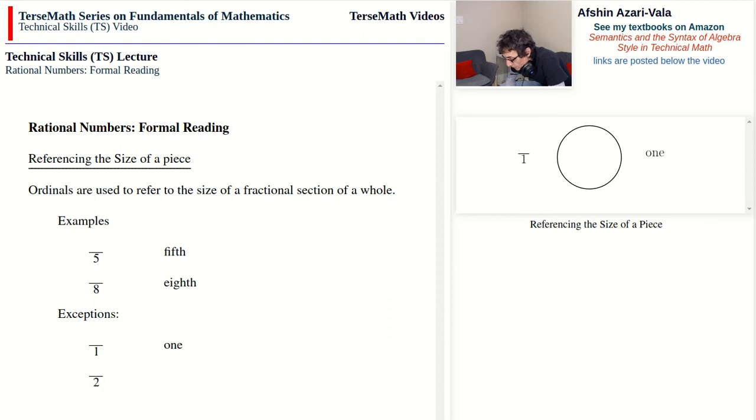If the denominator is two, we don't use the word 'second,' rather we use the word 'half.' So with two, a pie is cut into two parts and we refer to the size of one of these parts as a half.